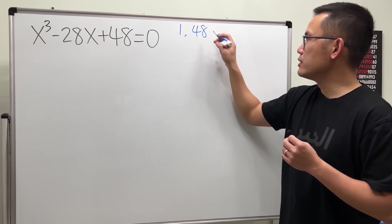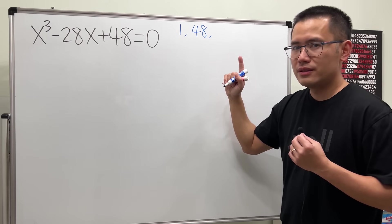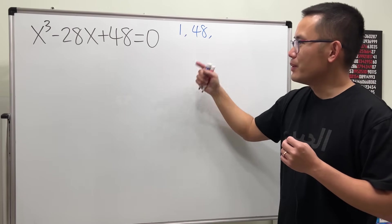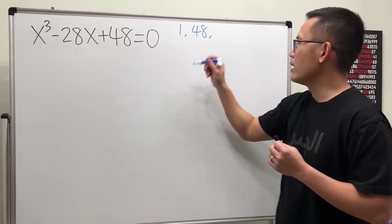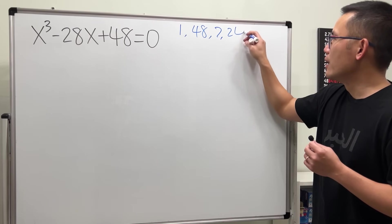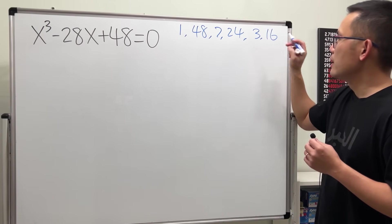Continue: 2 times 24 will also be 48, so 2 and 24, and then 3 and 16, and 4 and 12, and then 6 and 8. These are it.